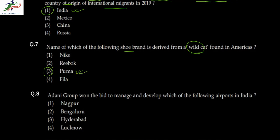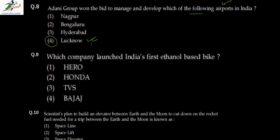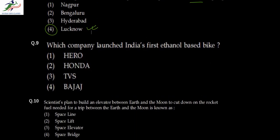Question eight: the Adani Group won the bid to manage and develop which airports in India? Adani recently won a bid to manage quite a few airports — Ahmedabad, Lucknow, Bangalore, and a few more. Since we know Lucknow is there, Nagpur, Bangalore, and Hyderabad are ruled out. So question eight is option four — Lucknow. Question nine: which company launched India's first ethanol-based bike? This was very popular in the news — TVS launched it recently, so TVS is the correct answer.